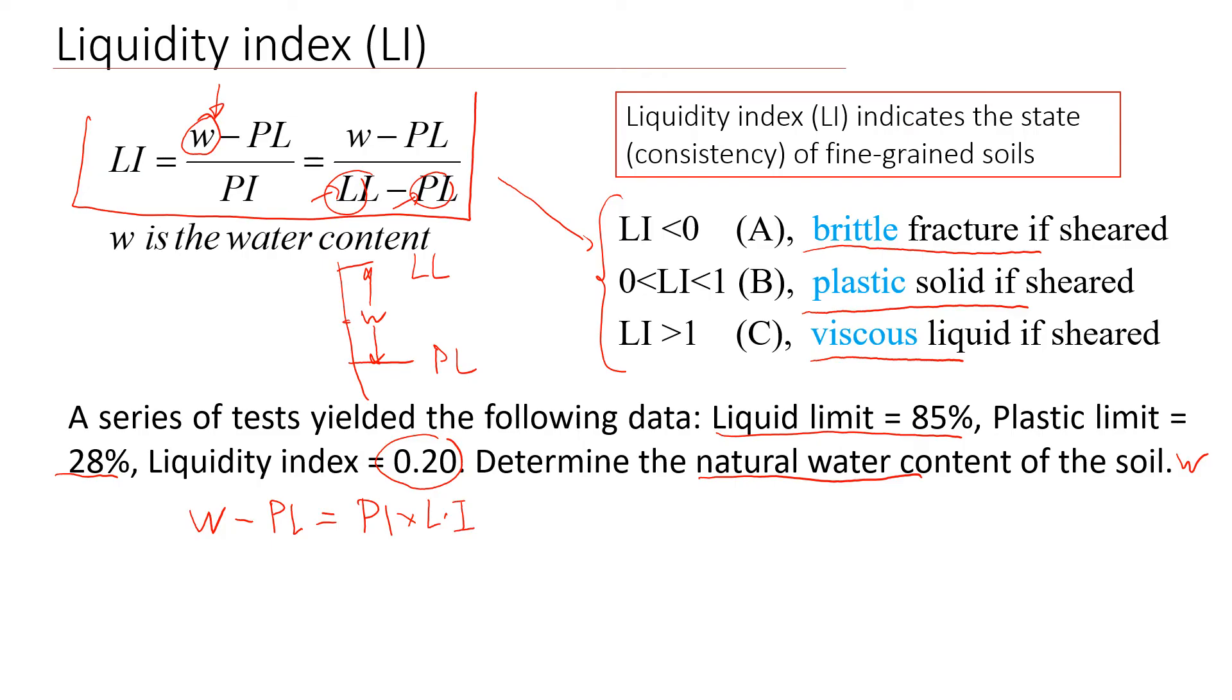So then we can rewrite it as water content minus plastic limit is 28. And then plasticity index is the difference between liquid limit and plastic limit. It's 85 minus 28. And then we're going to multiply it by 0.2.